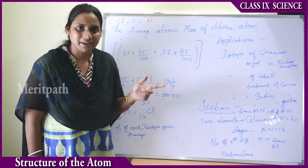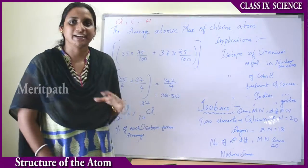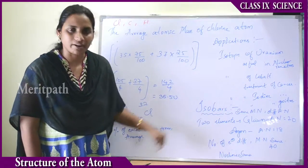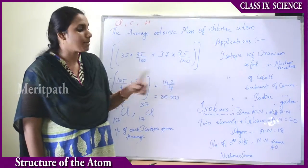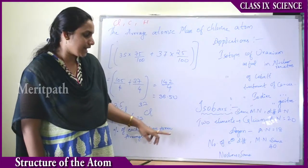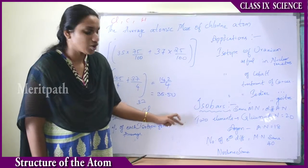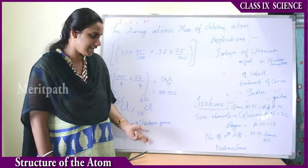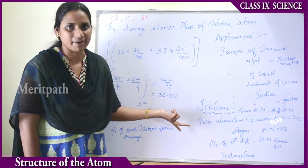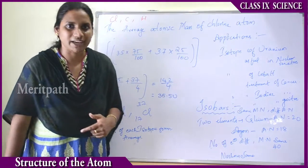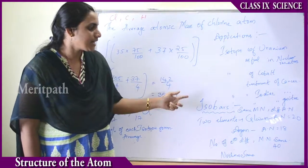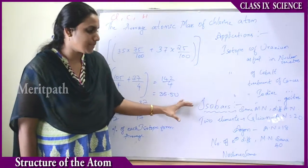Now let us see isobars. Isobars are two different elements having the same mass number but different atomic numbers. For example, calcium and argon: calcium has atomic number 20 and argon has atomic number 18, but the mass number of both elements is 40 — meaning protons plus neutrons equals 40 for both. The number of nucleons is the same, but the atomic numbers are different. Therefore, isobars are defined as different elements having the same mass number but different atomic numbers.